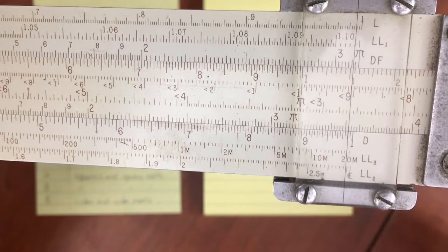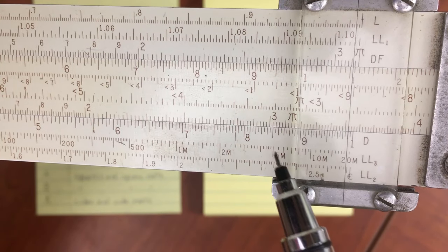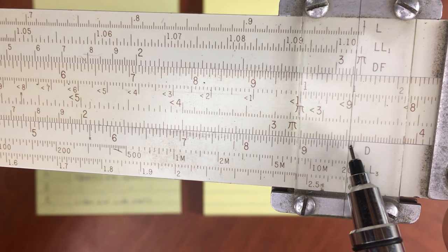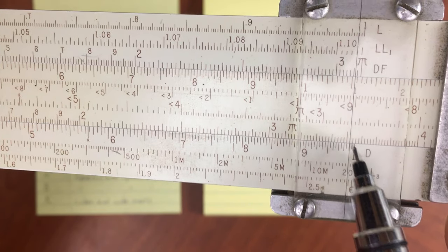And then read off of the C scale. I've got 3.52, so roughly about 35.2.